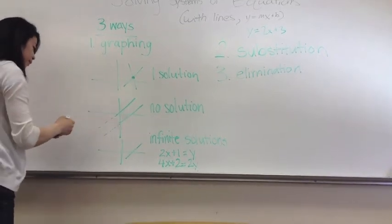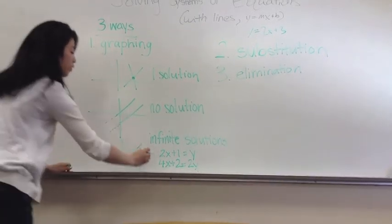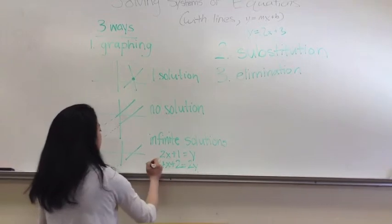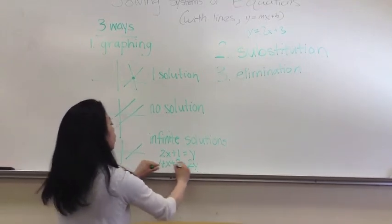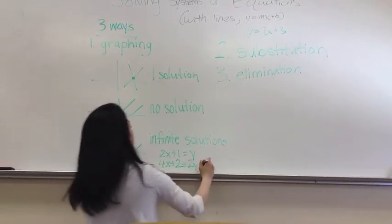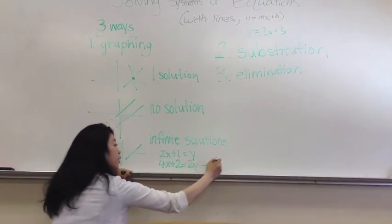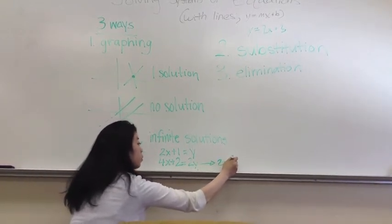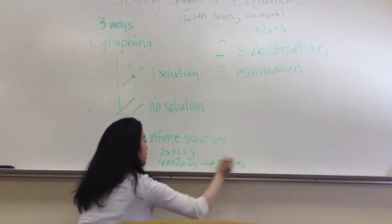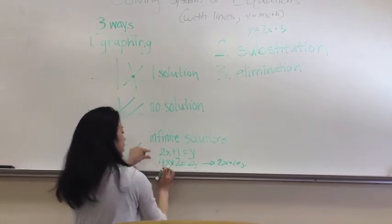Explain why they're the same line. Oh, and then these are the same. Well, for example, for this, these are the same line, because if you divide the whole equation by 2, it'll end up being 2x plus 1 equals y, which is the exact same as this. So these two equations are equivalent.